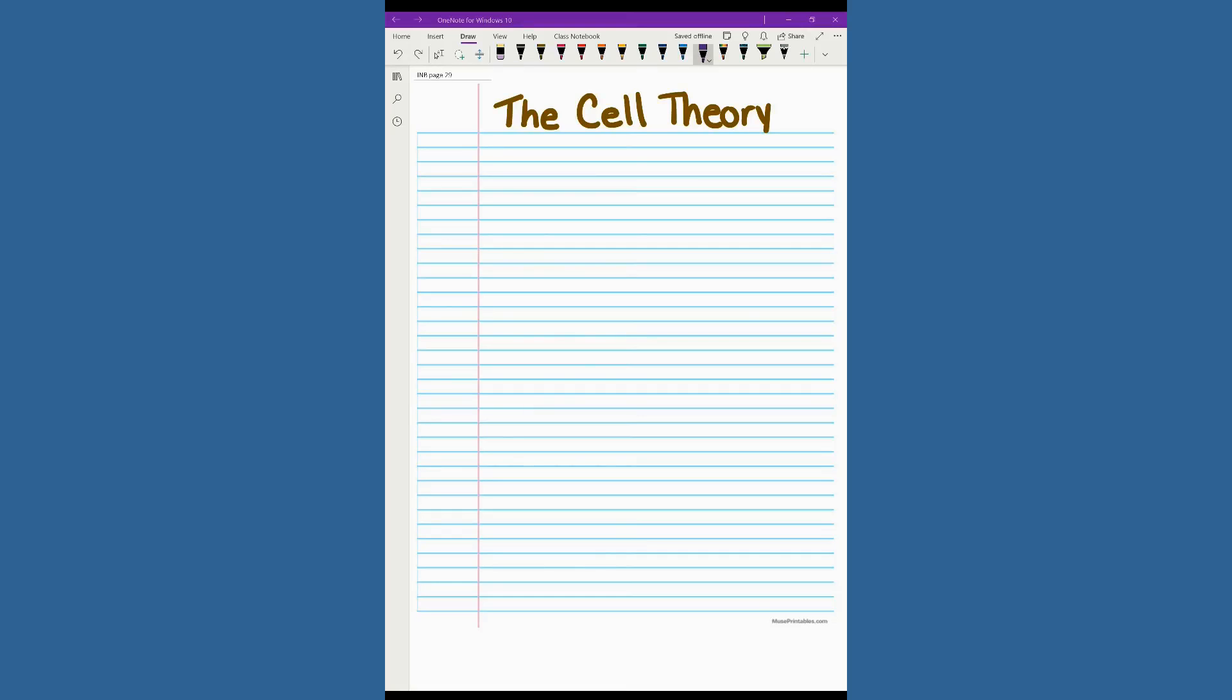Hey guys, this is Ms. Morgan, and in this set of notes, we're going to talk about something called the cell theory. If you will head over to page 29 in your interactive notebook, go ahead and title the page the cell theory, and we're going to set this page up for Cornell notes. So we need a horizontal line across the top of the page, and then about a third of the way over, we need a vertical line.